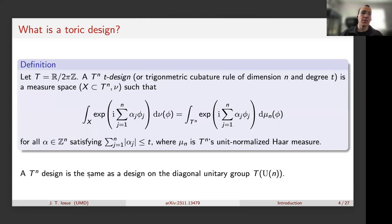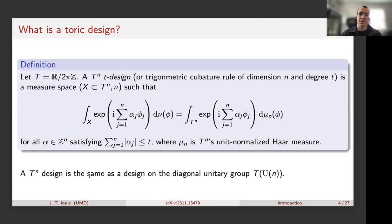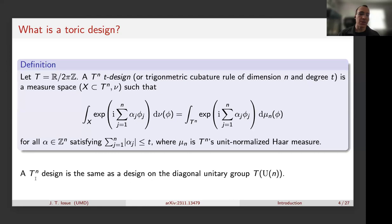Let me define a toric design. Throughout this talk T = R mod 2πZ. A toric design — also called a trigonometric cubature rule — is a measure space that exactly integrates monomials on the torus. These monomials are exponentials of the coordinates φ_j, where each φ is an element of T^n, and the filtration defining degree is that the sum must be less than or equal to t.